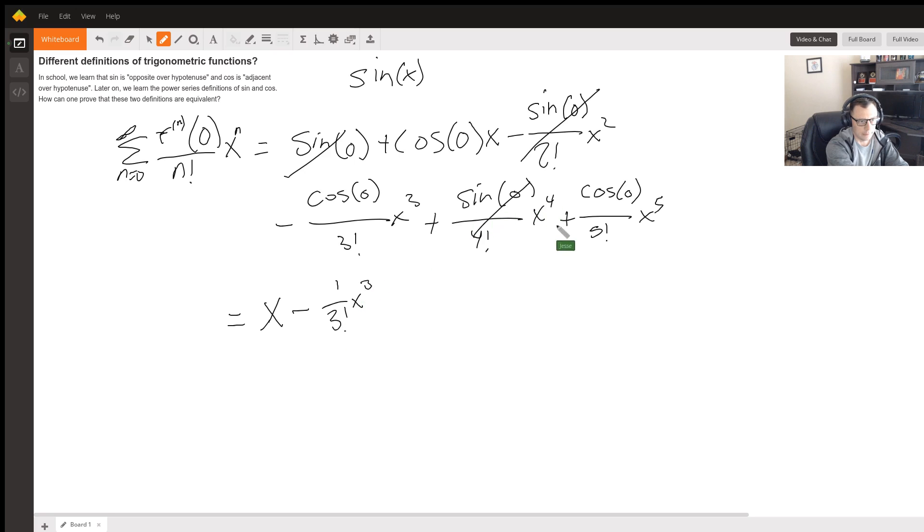This one got cancelled out. This one is going to be plus one over five factorial x to the five, and so on.